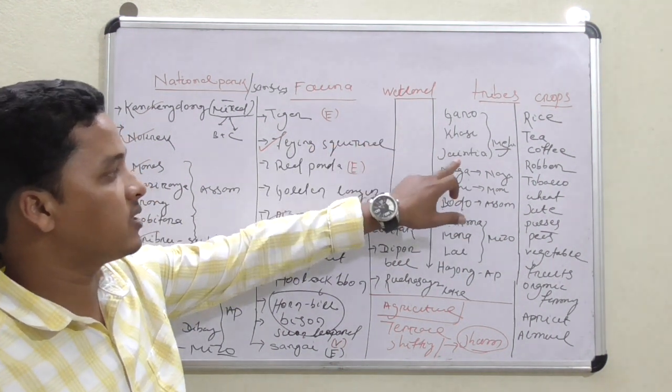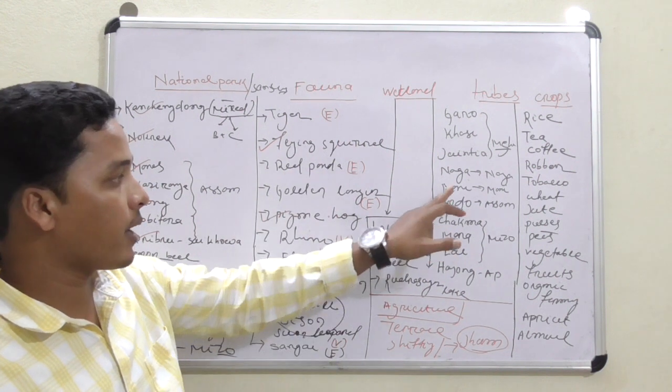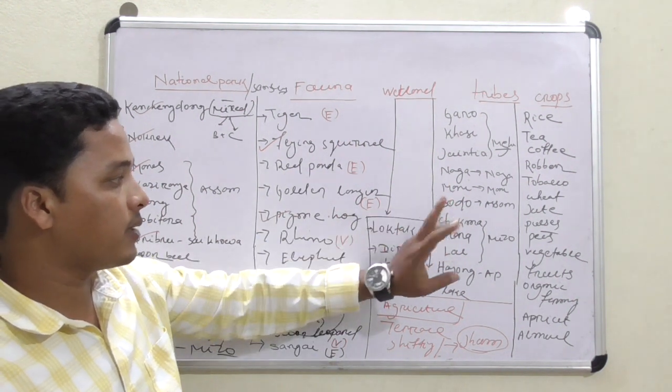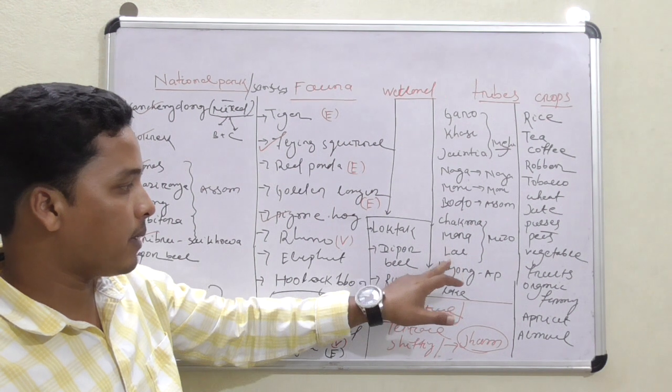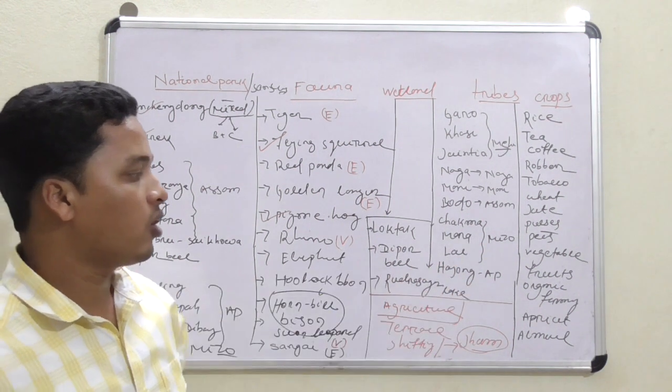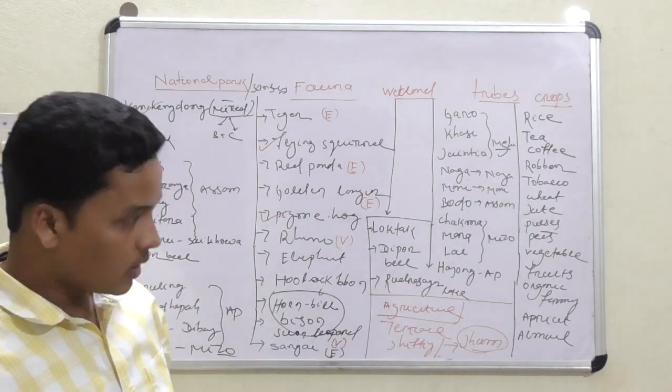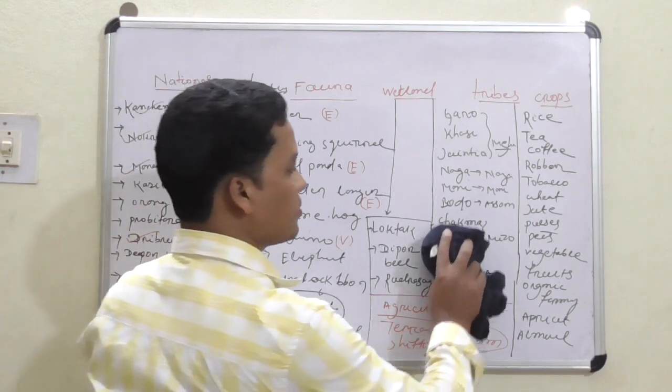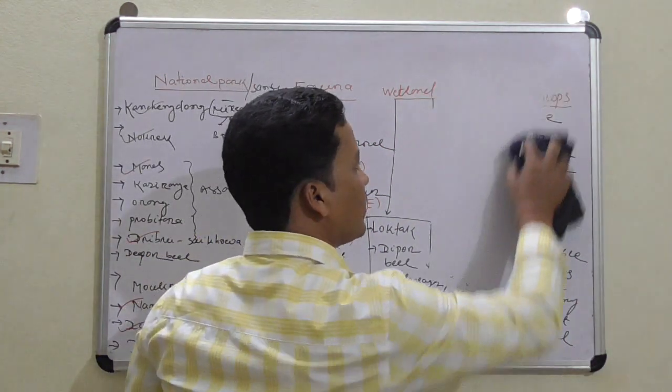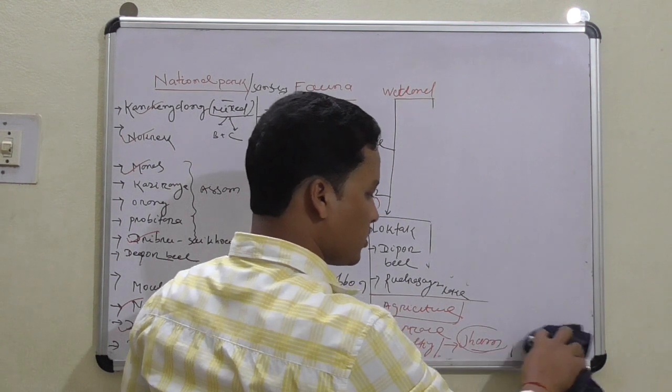Now come to the tribes. They might ask you the tribes: Garo, Khasi, Jaintia in Meghalaya; Naga in Nagaland; Mani in Manipur; Bodo in Assam; Chakma, Mara, Lai in Mizoram; Hajong, and tribes in Arunachal Pradesh. These are the tribes found in Northeast India, apart from other tribes.